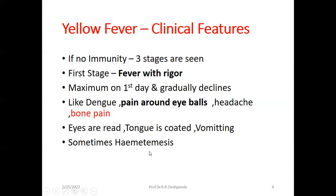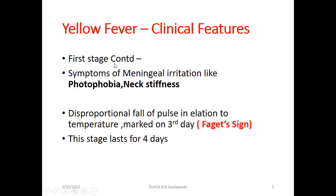Continuing with the first stage: symptoms of meningeal irritation are seen, like photophobia — fear of looking towards the light. Phobia means fear and photo means light. There will also be neck stiffness, which is always a feature of inflammation of the meninges — the brain coverings. Disproportionate fall of pulse in relation to temperature is marked on the third day, and this is called the Faget sign. Remember this term for yellow fever.